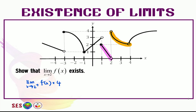Now let's check from the other side. We want to find the limit as x approaches 2 from the left for f(x). To approach x equals 2 from the left, we go along that part of the graph and the value settles at y equals 0. Therefore, the limit as x approaches 2 from the left is equal to 0. The value from the right is 4 and the value from the left is 0. According to your notes, does the limit exist at x equals 2?